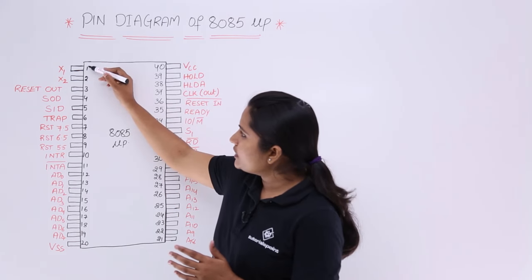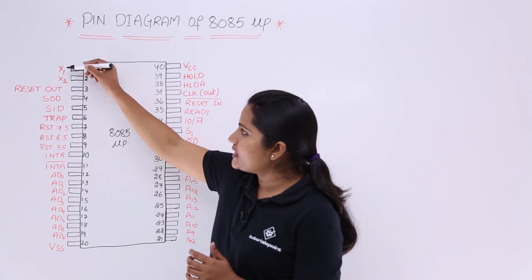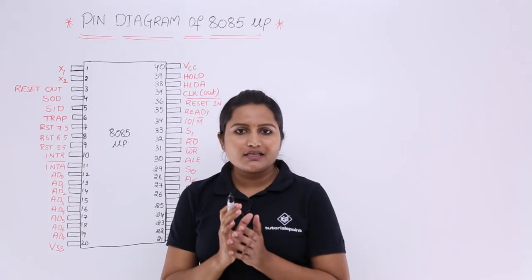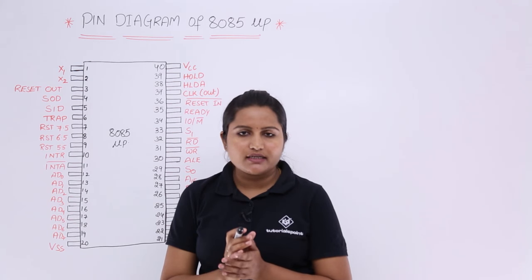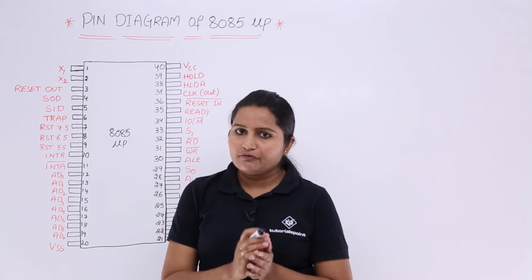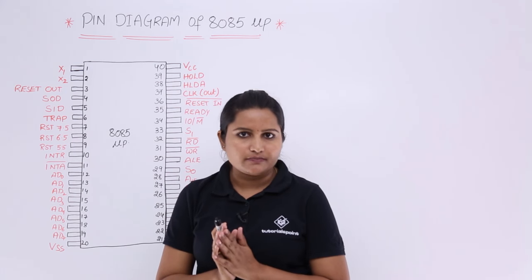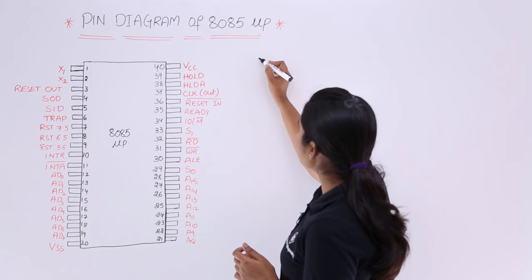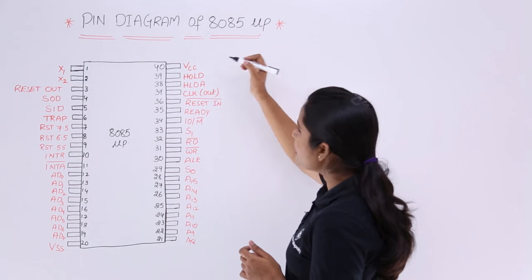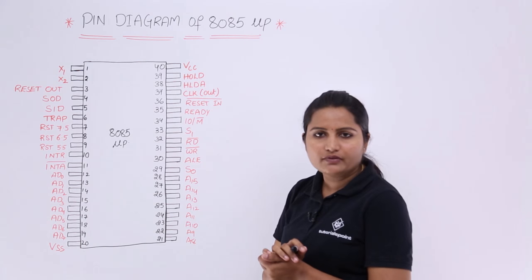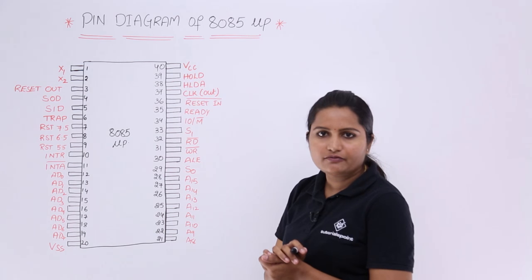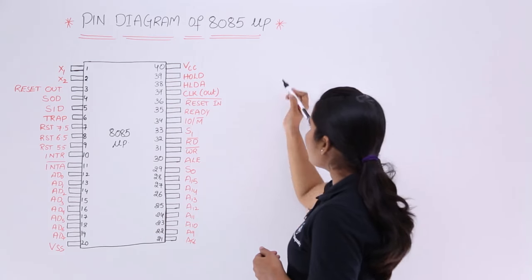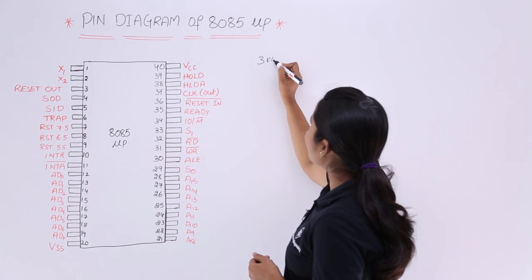The first 2 pins are X1 and X2, which represent the crystal oscillator that provides the frequency for the microprocessor. The crystal oscillator frequency is 6 MHz, and nearly half of that — approximately 3 MHz — is the operating frequency of the microprocessor.